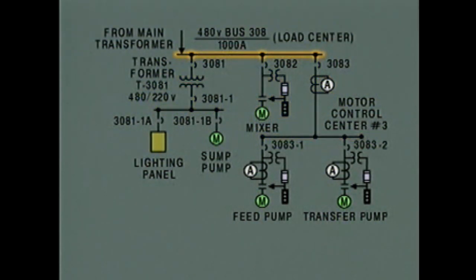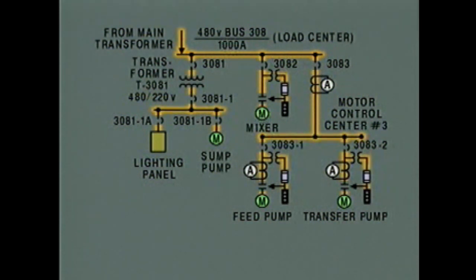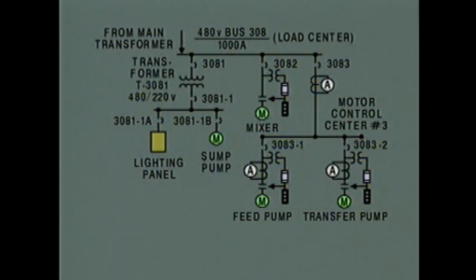A bus is a common conductor that connects a power source to several load circuits. Each circuit, or power transmission path, is shown on the diagram as a single line. We'll identify the components in this system as we trace the power transmission path on the diagram.